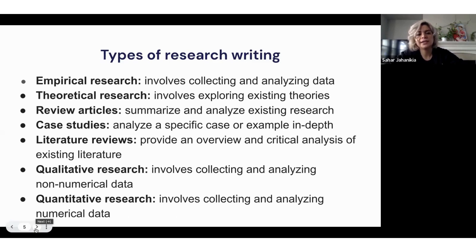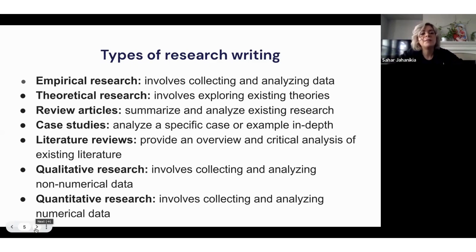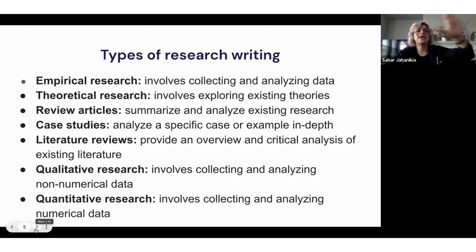Literature review provides an overview and critical analysis of existing literature. The difference from a review article is that in a review article you collect methodologies and data from papers and may redo analyses, whereas in a literature review you are just reading — you get 10 to 25 or more papers and write an overall overview without duplicating data.